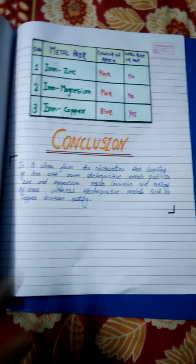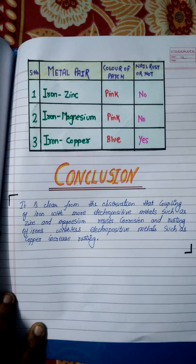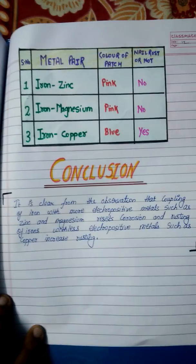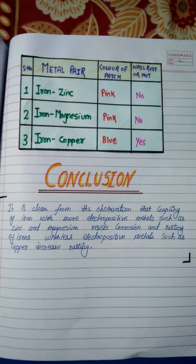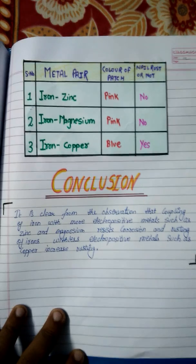Then comes the observation section, where I have taken various metals — you can see iron — which shows the metal pairs, color of patches, and whether it takes rust or not.